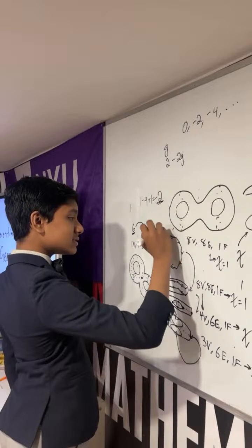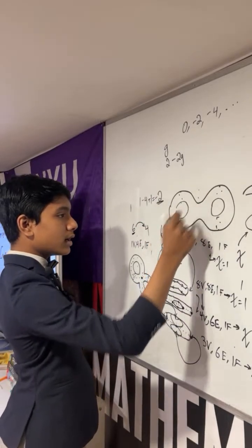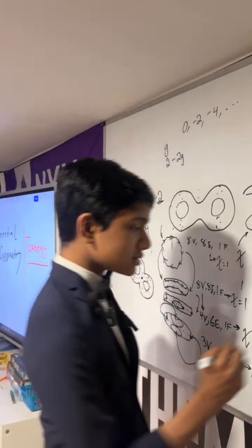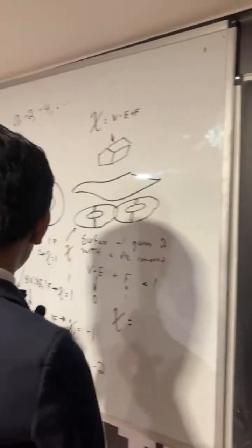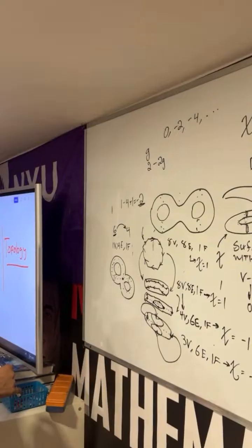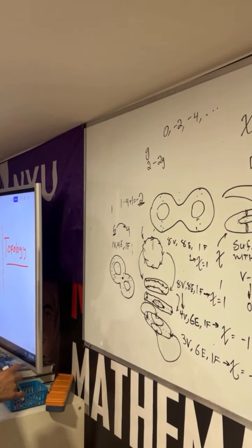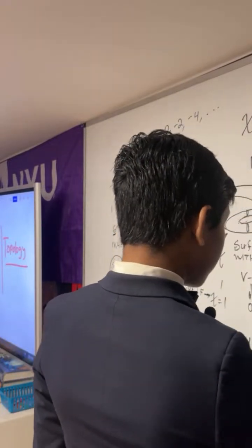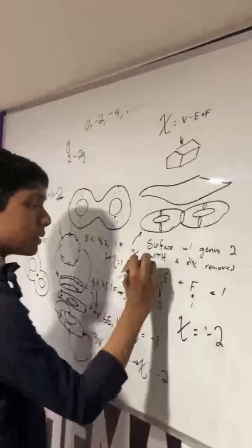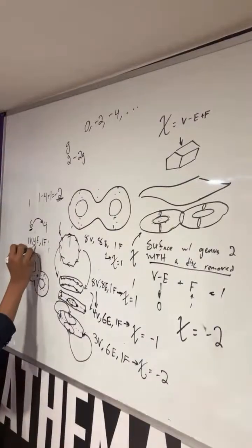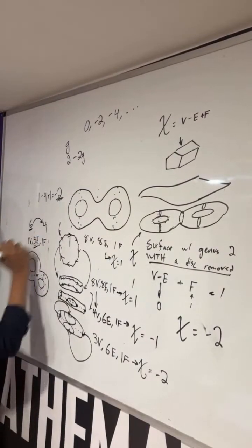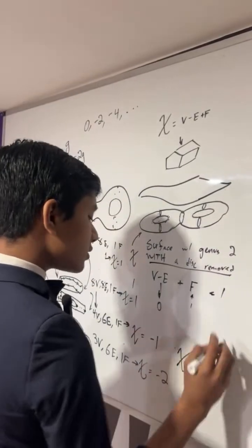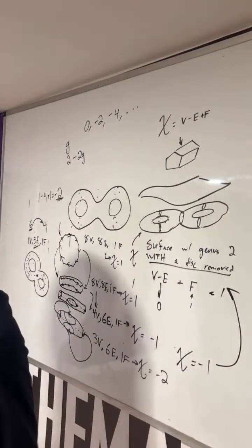That means the octagon can be deformed into a double torus with the right amount of twisting and contortion. The normal double torus has an Euler characteristic of negative two. But what we've done by removing a disk is remove one face, which automatically increases the Euler characteristic by one — which means the Euler characteristic of this surface is negative one. That's it — thank you everybody for watching, and we'll see you in the next one.